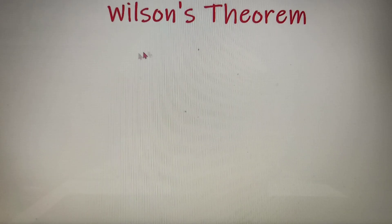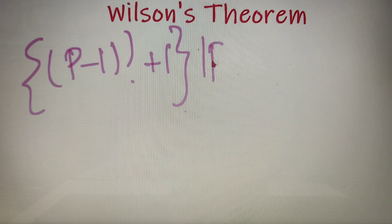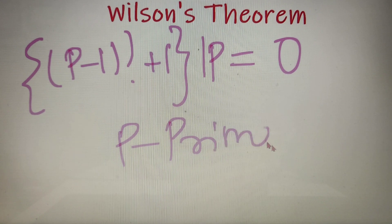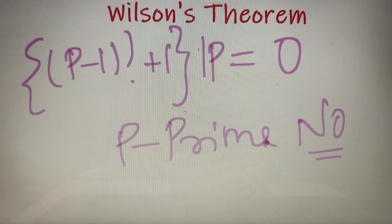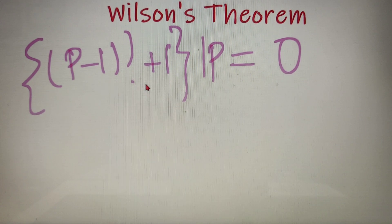Wilson's theorem is pretty straightforward. It states that when (p-1) factorial plus 1 is divided by p, the remainder obtained is 0, where p is a prime number. A prime number is one divisible only by 1 and itself — for example, 7 and 19 are prime numbers.